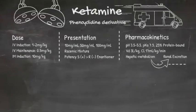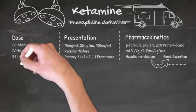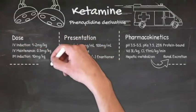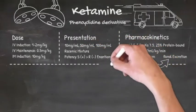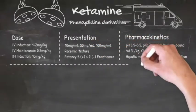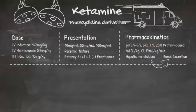it's actually eliminated from the body much slower, with a terminal half-life of 3 hours. In the liver, it's metabolised to the active metabolite norketamine, which is further metabolised to inactive conjugates, which are renally excreted.